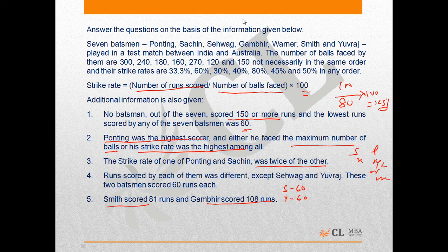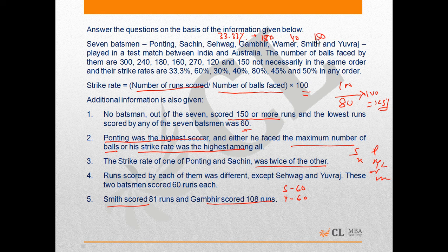For 60 runs: strike rate of 33.33 with 180 balls, strike rate of 40 with 150 balls, and strike rate of 50 with 120 balls. These three are the possible pairs of strike rates and balls faced that would give us 60 runs.